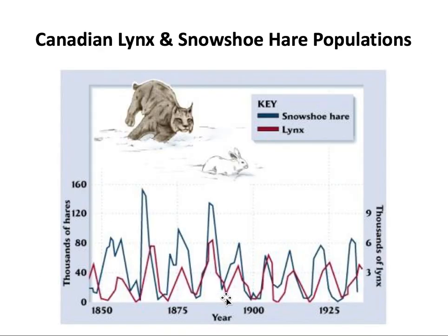Here is one example involving the lynx and the snowshoe hare. You can see two populations on this graph. The blue is the prey — the snowshoe hare population — and the red is the lynx population. You can see them responding to each other and the cyclical nature of the predator-prey populations. If prey populations are high, the predator populations can grow. As the predators eat more of the prey, the prey population will come down, and then so will the predator population. It's a very cyclical cycle.